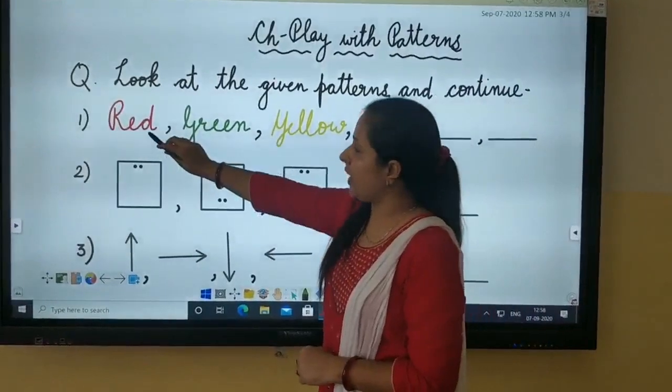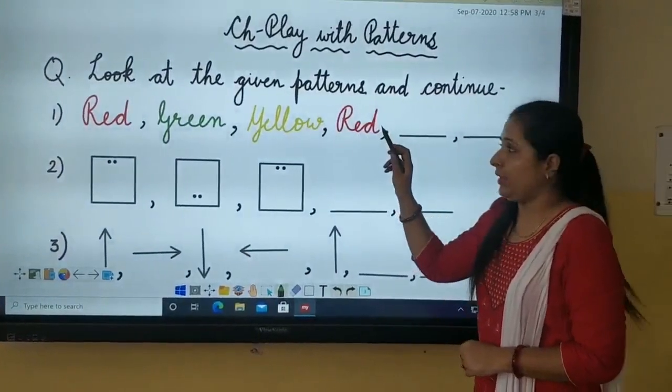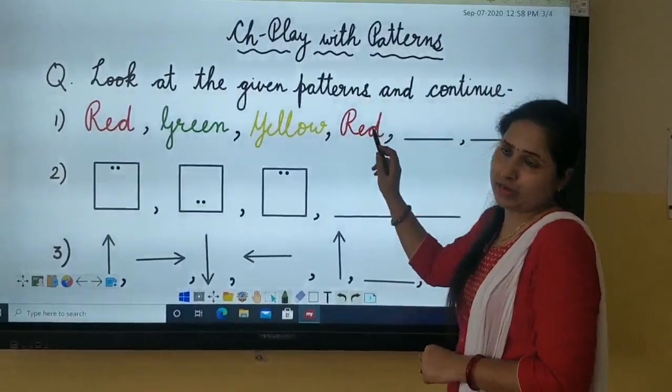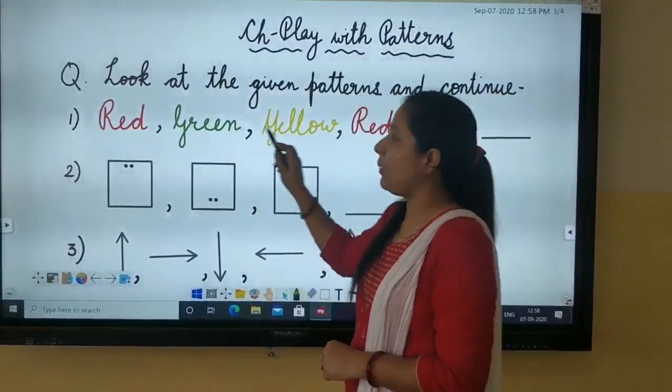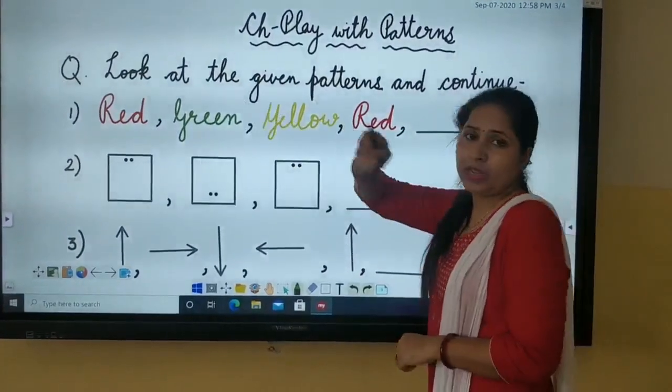So what is the first pattern? It is written red, green, yellow, red. It means we can observe after yellow again it is red. Means these colors are being repeated. So after red, what will come next? It would be green.